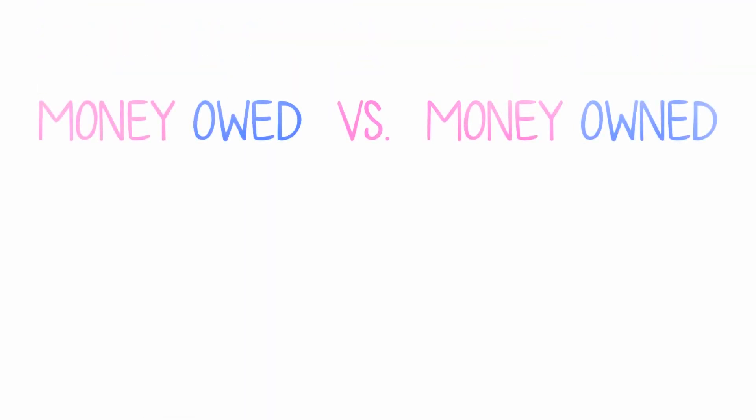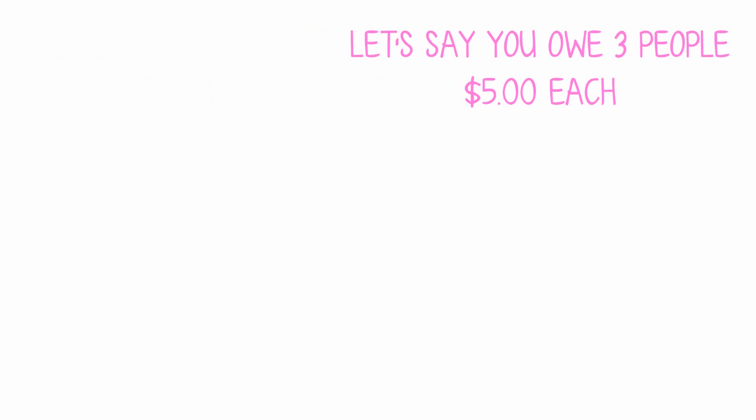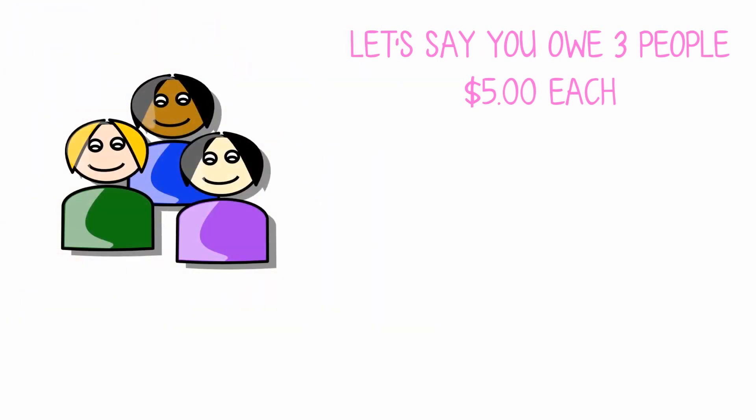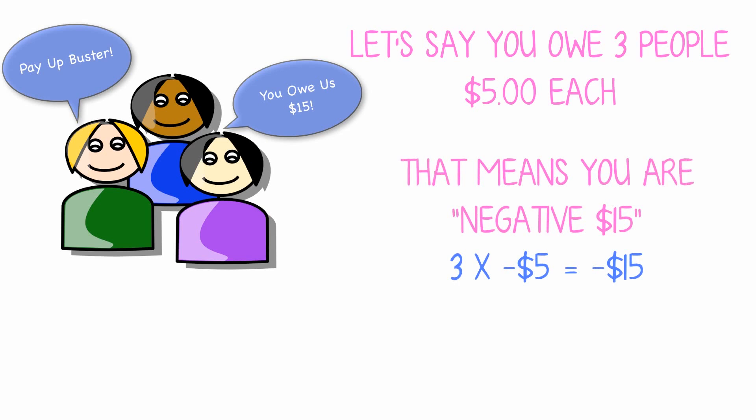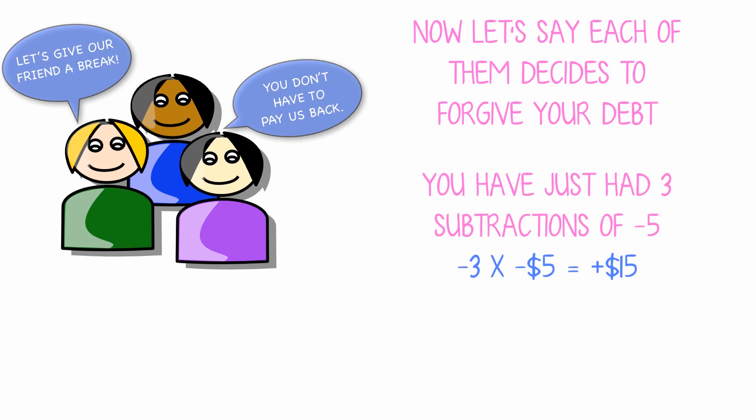Money owed versus money owned. Let's say you owe three people $5 each. That means you are negative $15. Let's say each of them decides to forgive your debt. You have just had three subtractions of negative 5. You now have no debt.